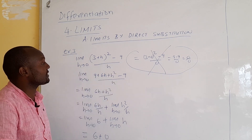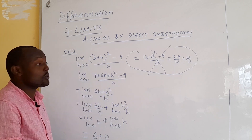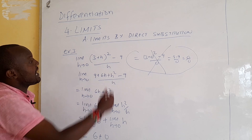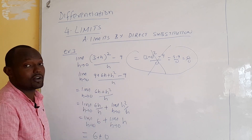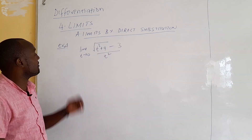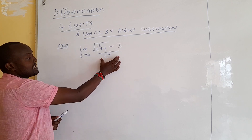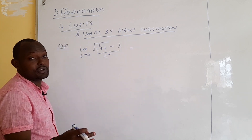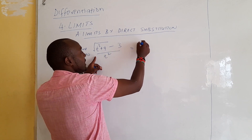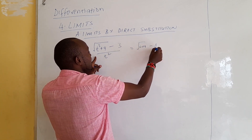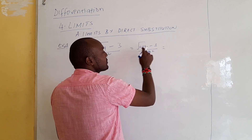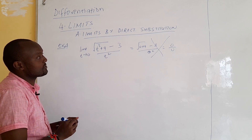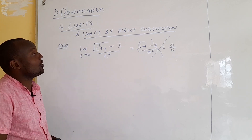We have seen cases where we factorize and cases where we expand. Now we look at a situation where we multiply by a conjugate. Example 4: the limit as t approaches 0 of [√(t² + 9) - 3] / t². Using direct substitution: √(0 + 9) - 3 over 0 = √9 - 3 over 0 = 3 - 3 over 0 = 0/0. Again we cannot solve directly.